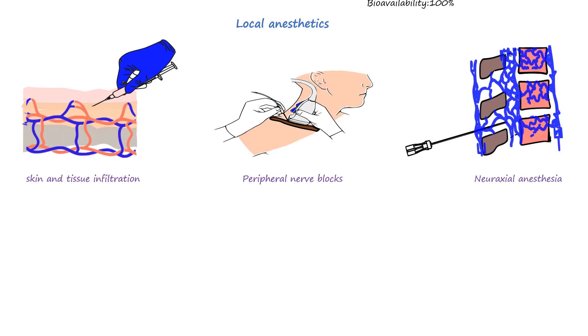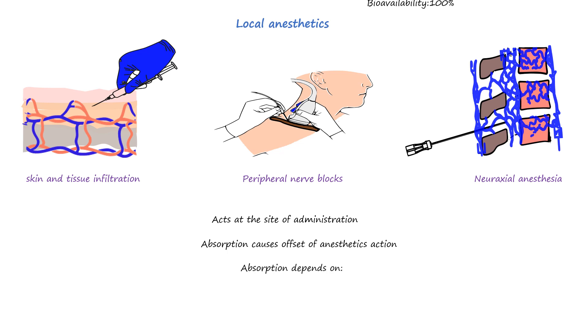One of the main drugs used in anesthesia practice are local anesthetics. They are used for skin and tissue infiltration, peripheral nerve blocks, and neuraxial anesthesia. When a local anesthetic is injected into the skin or tissues, it diffuses through the tissue until it reaches the nerve fibers where it blocks nerve impulse generation. In contrast to oral drugs, absorption of local anesthetics from the site of administration is responsible for the offset of its action. Highly vascular areas such as muscle or mucosal tissues result in faster absorption compared to lesser vascular tissues like adipose tissue. The chemical properties of local anesthetics — like lipid solubility, dissociation constant, and use of additives like epinephrine — also influence their absorption.